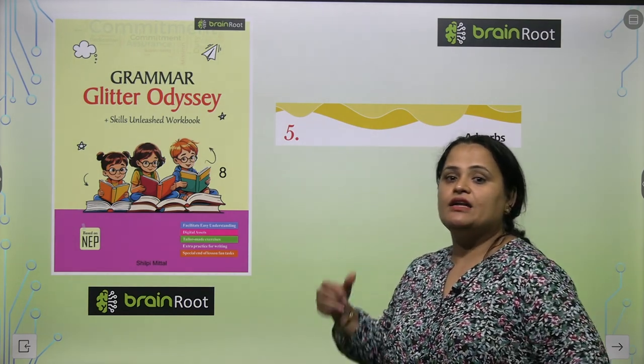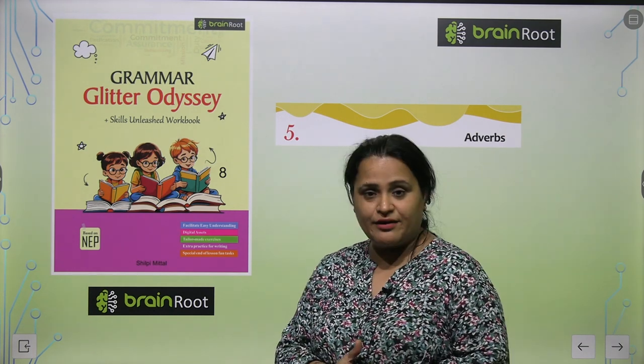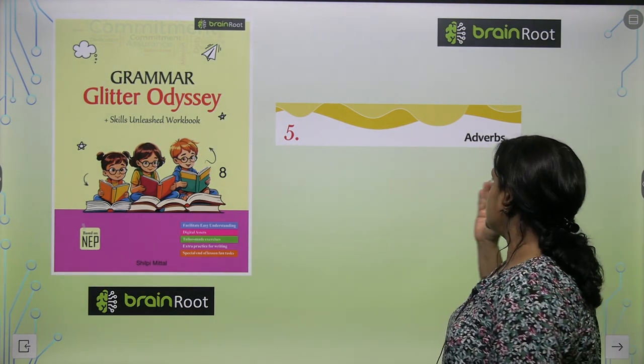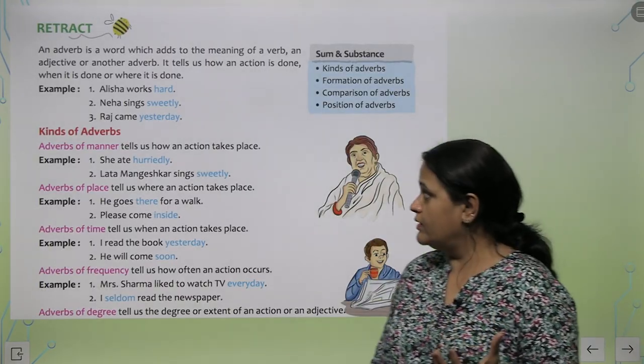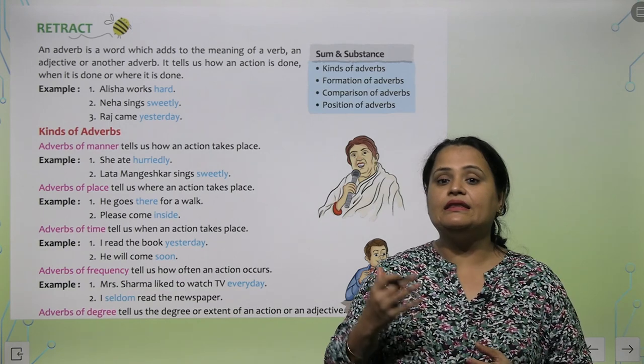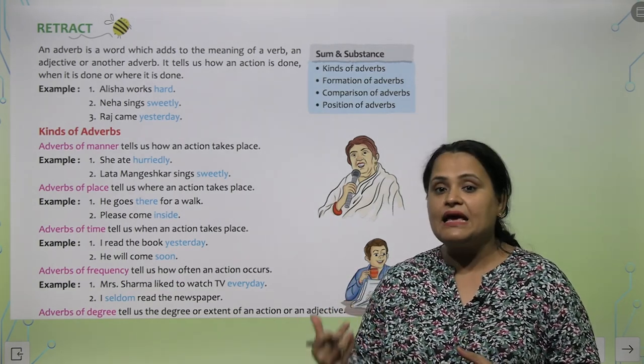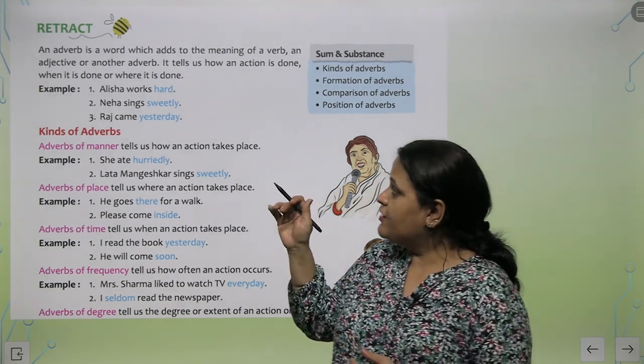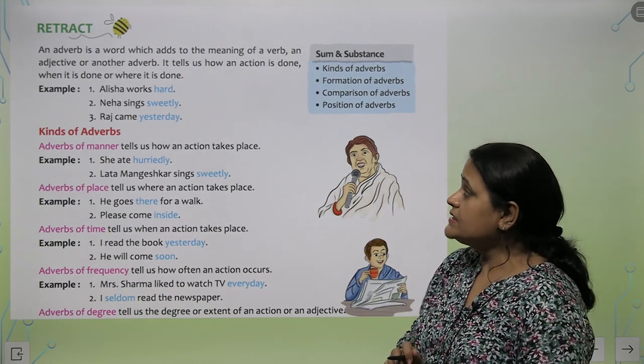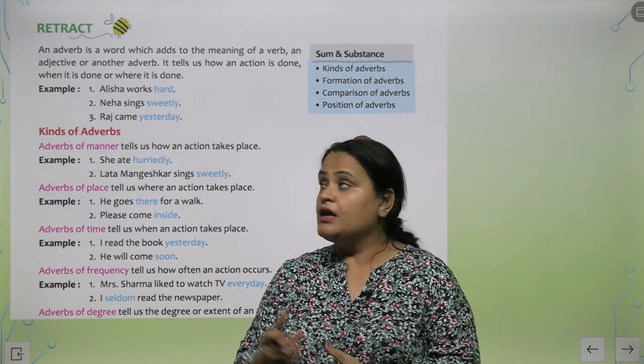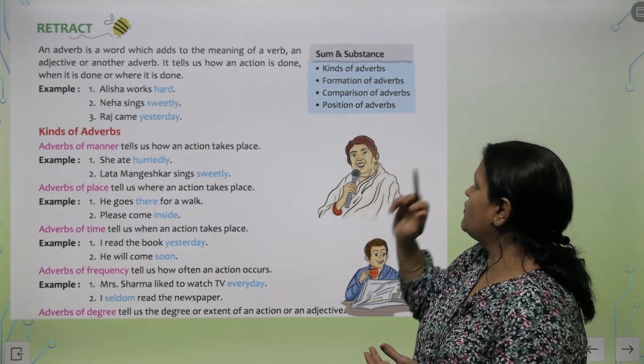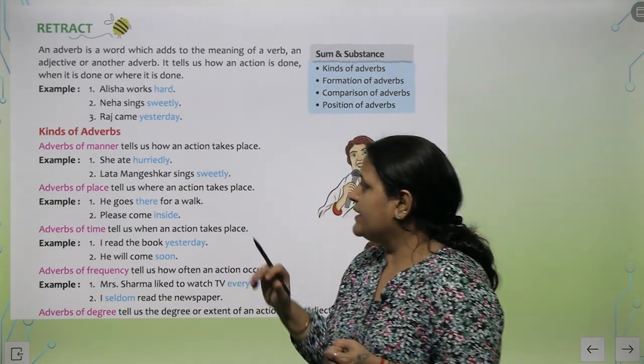So kids, now I am going to start the 5th chapter from your book Grammar Glitter Odyssey by Brain Root from Amit Publishing House. The chapter number is 5 and the chapter name is Adverbs. An adverb is a word which adds meaning of a verb - how the action is done, frequency, time, place. An adverb adds to the meaning of a verb, an adjective or another adverb. It tells us how an action is done, when an action is done and where it is done. The kinds of adverbs are formation of adverbs, comparison of adverbs and positions of adverbs.